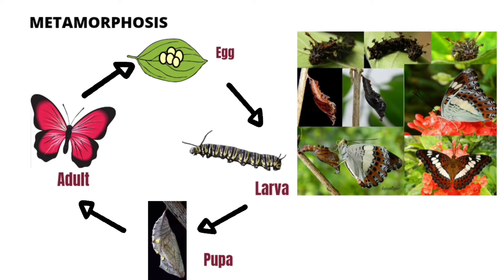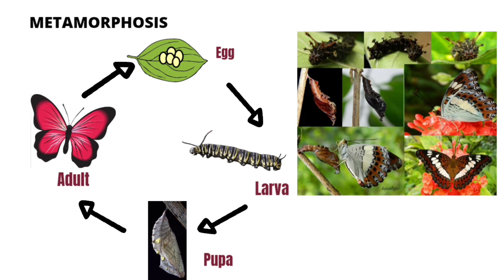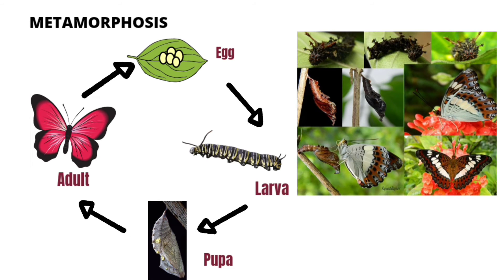The series of drastic changes occurring in an organism during the stage of its development is known as metamorphosis. For example, an egg turns to larvae, larvae turns to pupa, and pupa turns to an adult butterfly. Here we can see that the organism at each stage has a different appearance as well as different characteristic features.